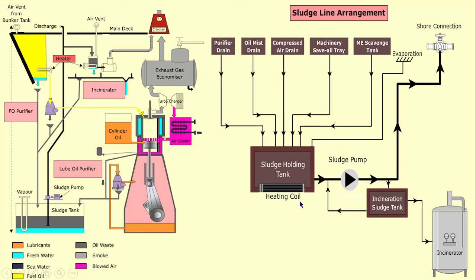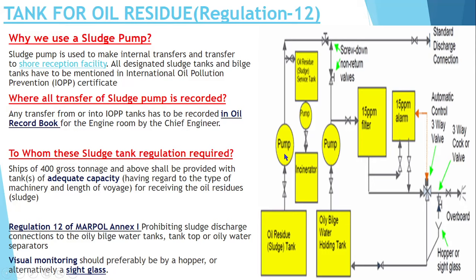If anybody asks you from where sludge is generated, these sludge are generated from various areas. Here you can see you have a bunker tank and this is the fuel oil purifier. From the bunker tank you purify the oil, and after that the sludge which is generated is collected in a sludge tank. Same goes for the lube oil — you are purifying the lube oil and the sludge is collected in a sludge tank. Like that, there are many sources from where sludge is generated on board, which are collected in an oily residue sludge tank.